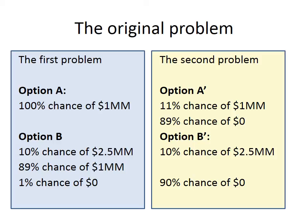In the second problem, the one with a yellow background, we had two gambles. The first option was an 11% chance of $1 million and an 89% chance of nothing. The second option was a 10% chance of $2.5 million and a 90% chance of zero.